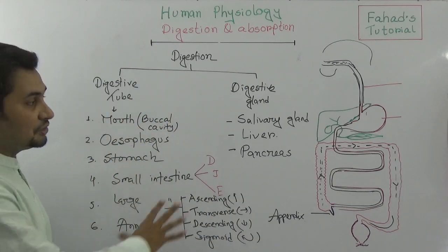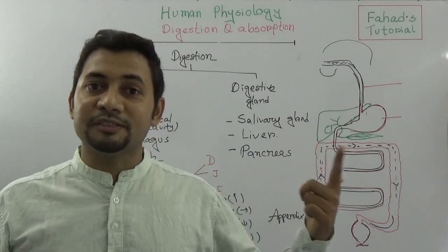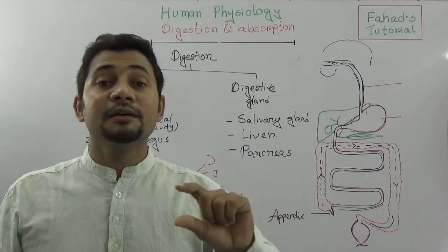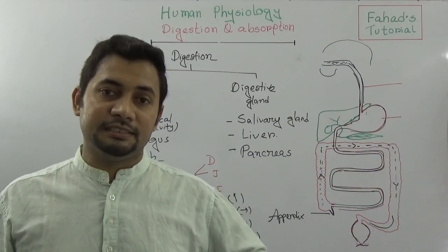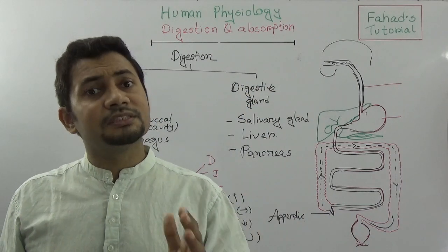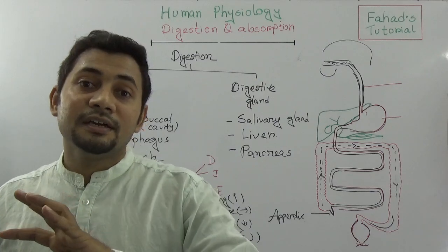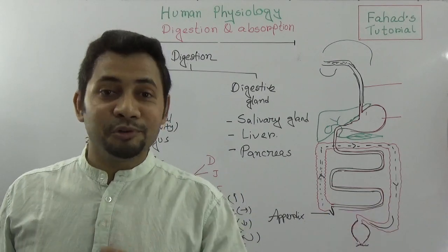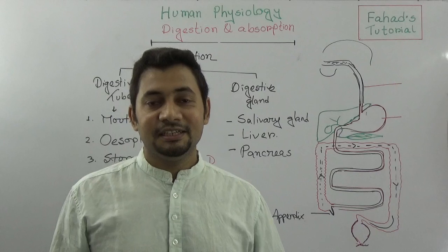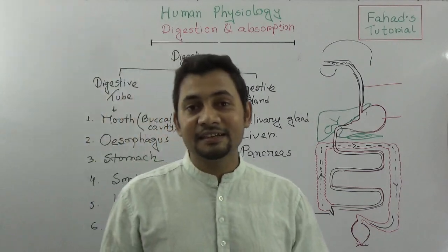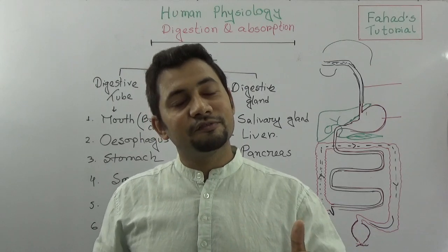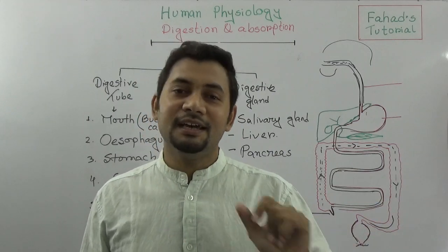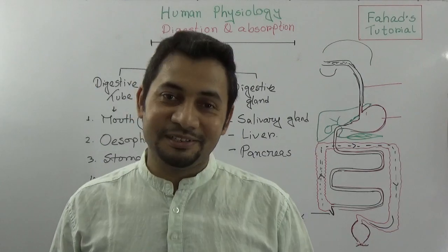In this first tutorial on human physiology digestion, we covered the digestive tube and digestive glands, the definitions of food and nutrition, and the three key enzyme types: amylolytic enzymes breaking carbohydrates into glucose, lipolytic enzymes breaking fats into fatty acids, and proteolytic enzymes breaking proteins into amino acids. The next tutorial will cover the digestion process in the stomach, small intestine, and large intestine. See you in the next tutorial — stay well, bye.